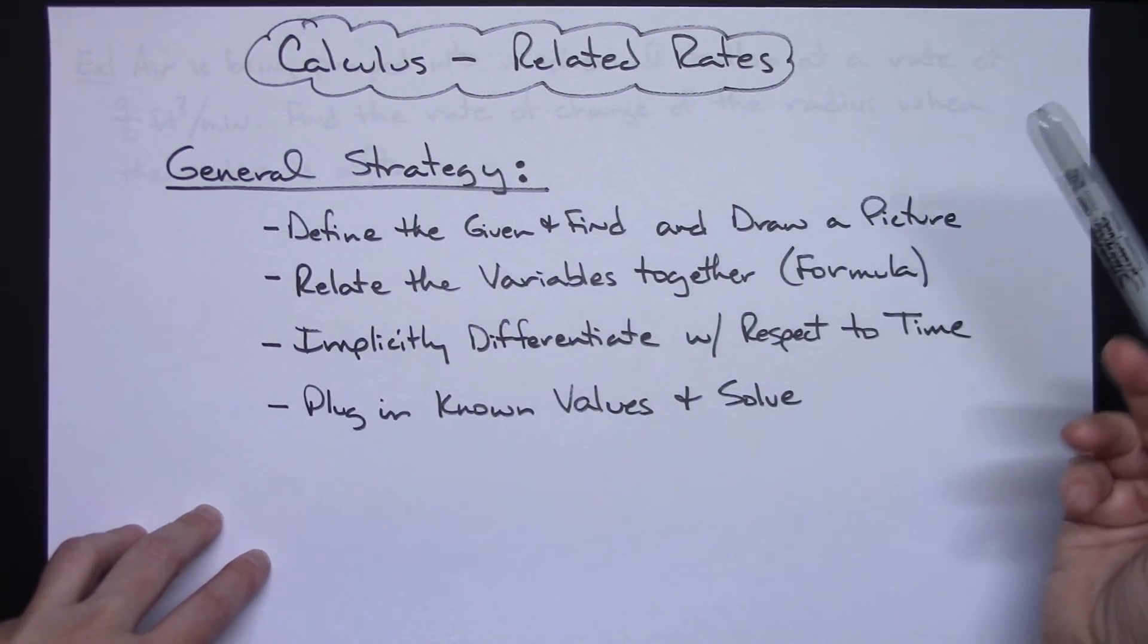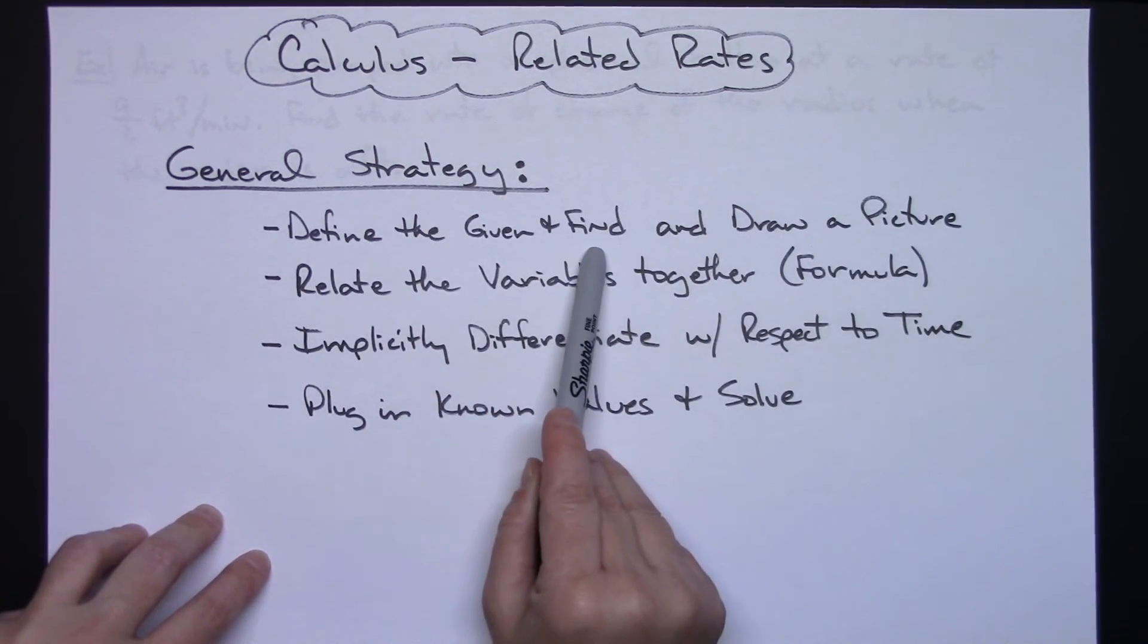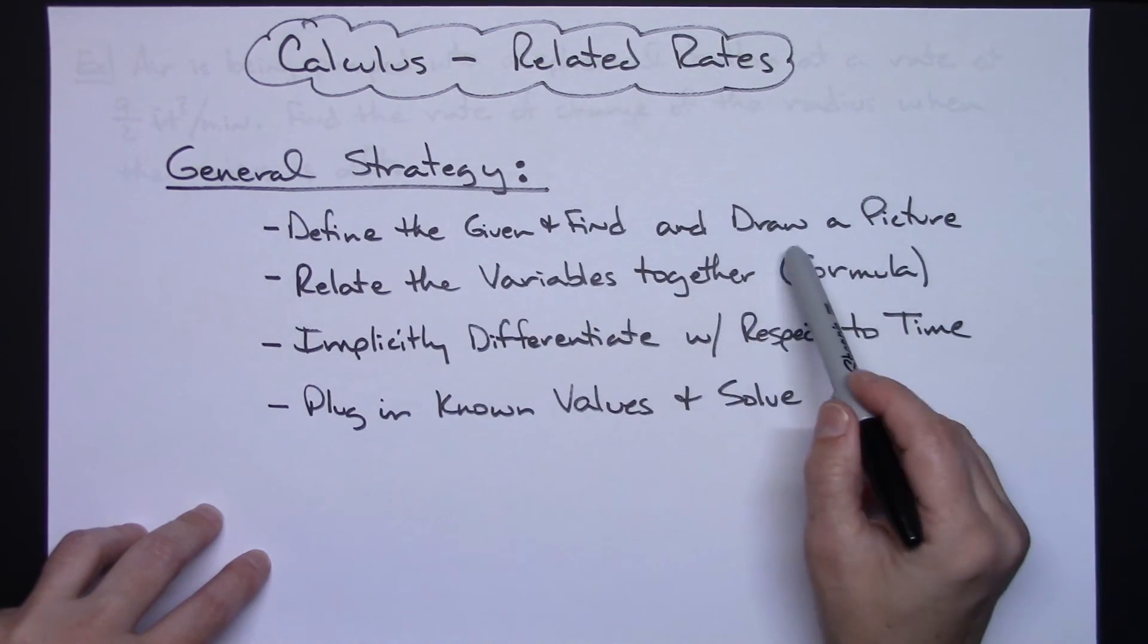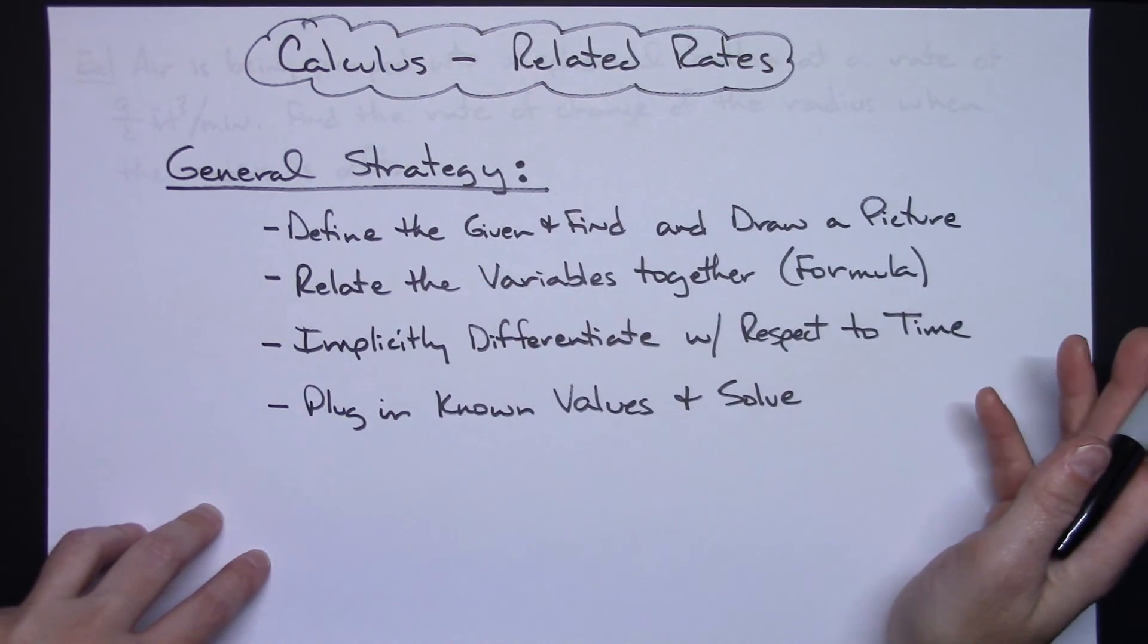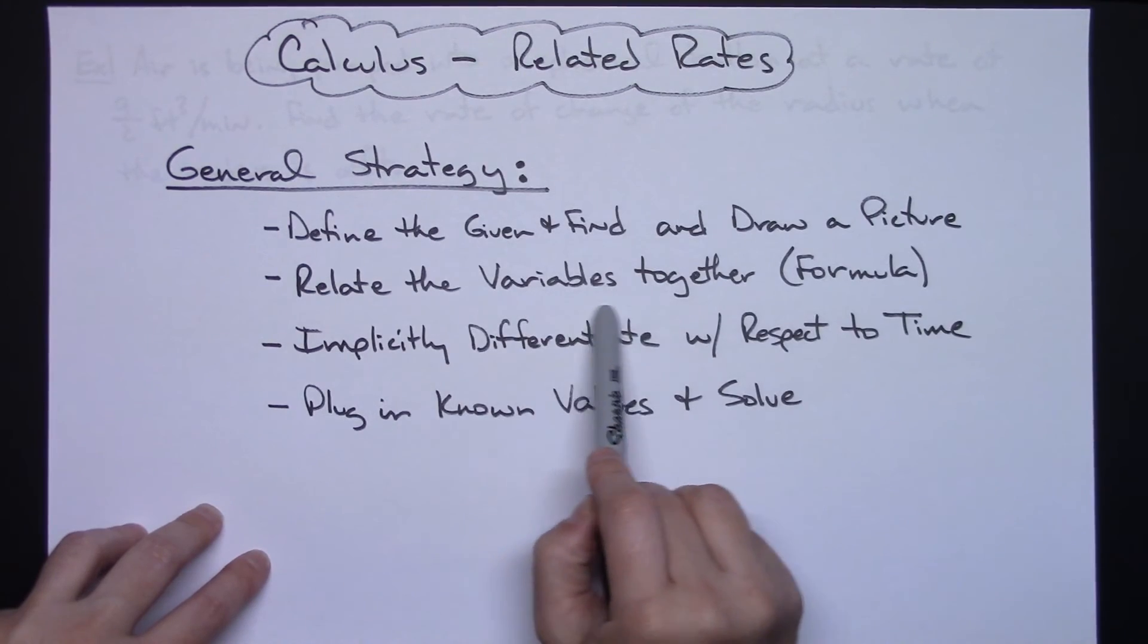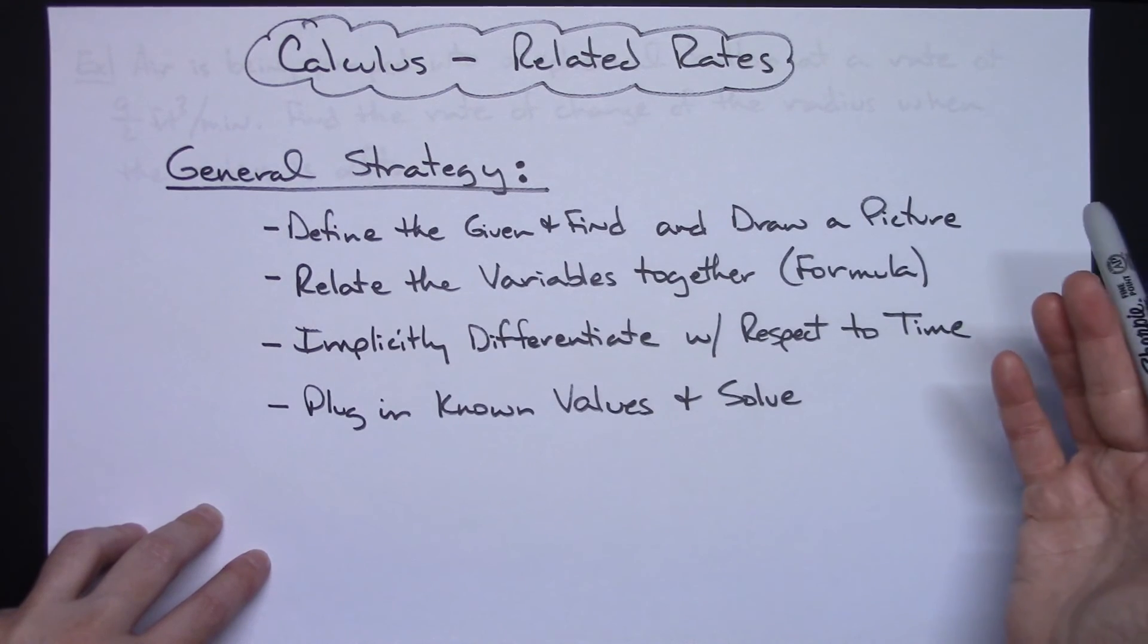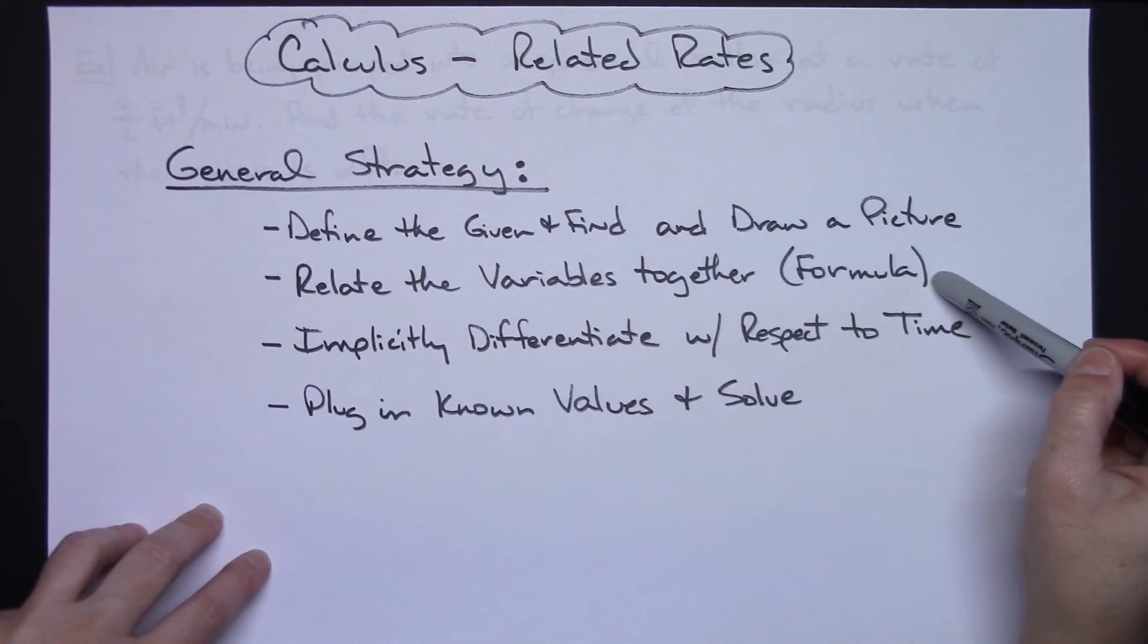In general, my strategy for solving any related rates problem would be to first define your given and your find. Write it down so you can clearly identify that from your story problem. And if possible, draw yourself a picture. Sometimes pictures help a little bit. Then you're going to have to relate the variables together. Figure out what's being asked for, what you're trying to find, what you're given, and how can these variables relate together, because in general it's probably going to be some formula, probably a common geometric formula that you know.